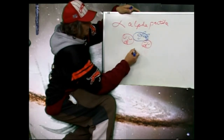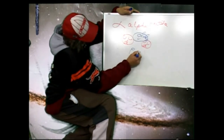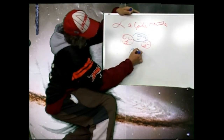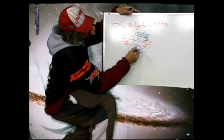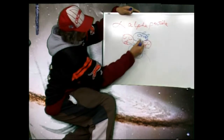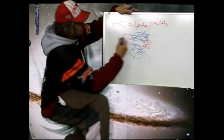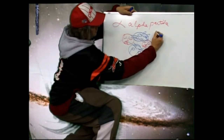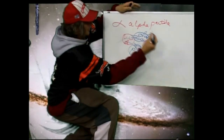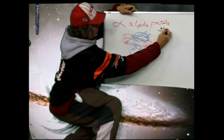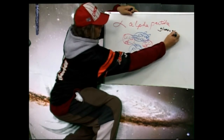Up quark and down quark — draw these upside down: down, up. The gluons, remember there are three, and then from here you can count one, two, three. It's the strong force — gluons, strong force.